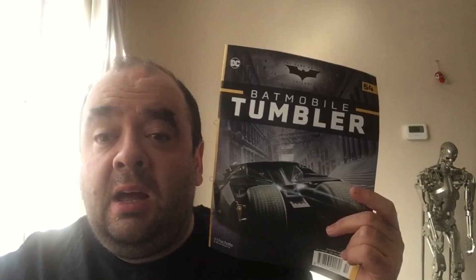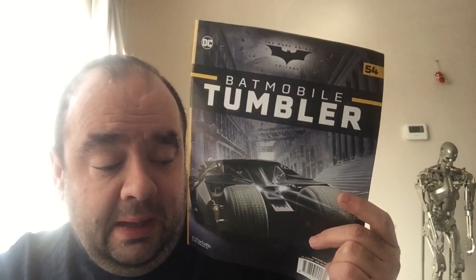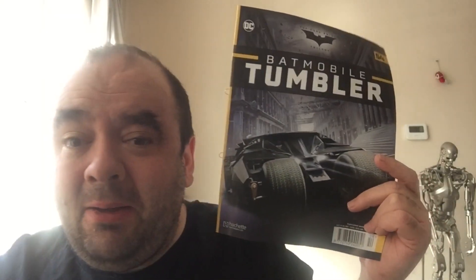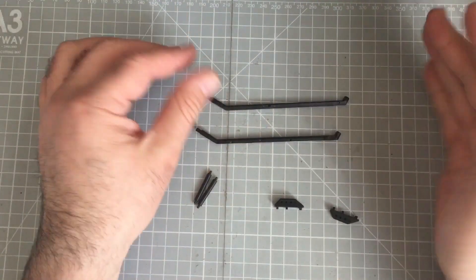Hi, welcome to issue 54, the Batmobile Tumbler by Hachette. Not a huge amount to do today, but we're gonna get a part out that we haven't seen since like issue 1 or 2 or something like that. I hope you enjoy.